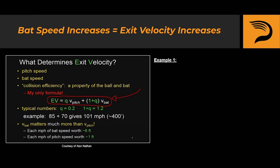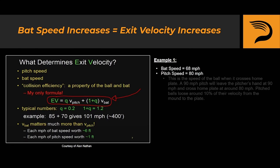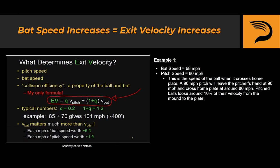Example number one: you are swinging the bat 68 miles per hour and the pitch is crossing home plate at 80 miles per hour. If we assume a perfect collision efficiency of 0.2, the hardest exit velocity you can achieve here is 97.6 miles per hour, which is good but it's not great.